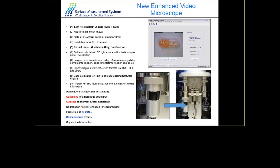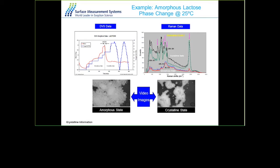The system comes with a camera at the bottom of the sample chamber. The color camera is useful for monitoring any changes in the material, including swelling of pharmaceutical excipients, collapsing of structures, degradation, color changes, and hydrate formation. A typical example combining gravimetric analysis, Raman spectroscopy, and video images is for amorphous lactose.